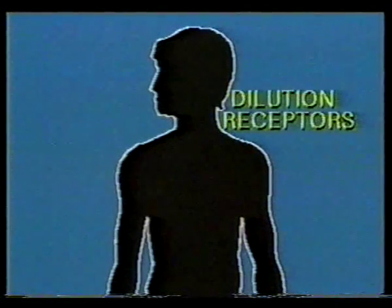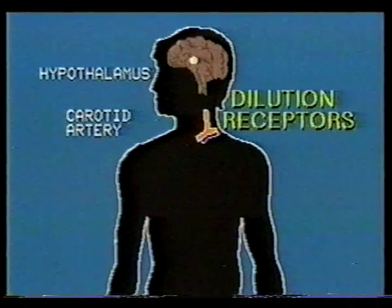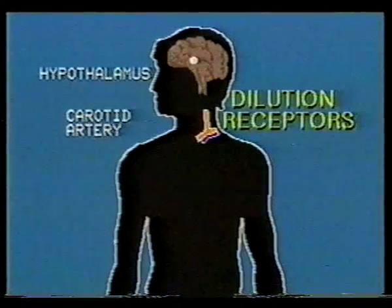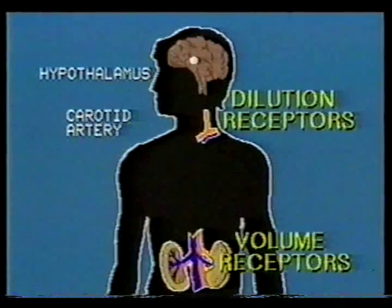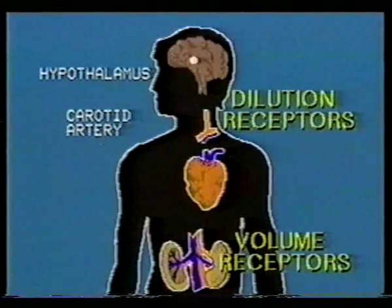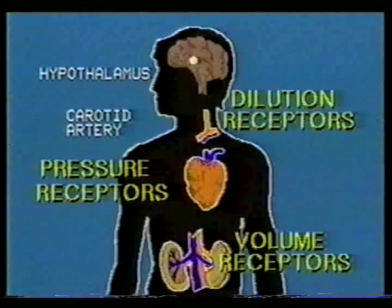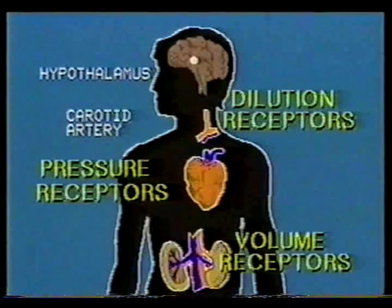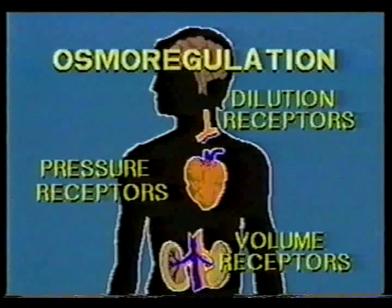The human body monitors this sea with dilution receptors in the hypothalamus and carotid artery, blood volume receptors in the kidneys, and pressure receptors in the atrium of the heart. These receptors are part of a complex warning system for osmoregulation, which protects the sea within.